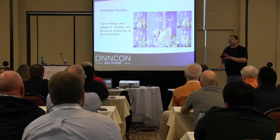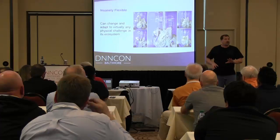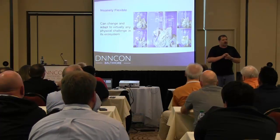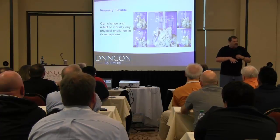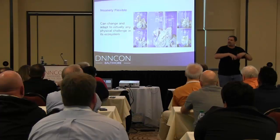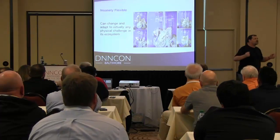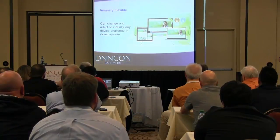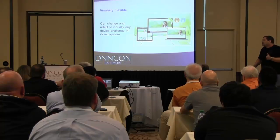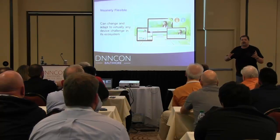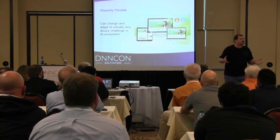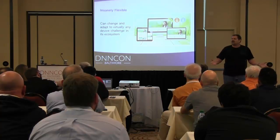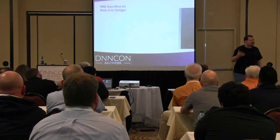Octopodes are also insanely flexible. The only hard part of an octopus body is their beak. Everything else is soft tissue, and it can bend and twist and stretch and grasp — they're really amazing animals to watch. DNN is also insanely flexible. Not only is it flexible in responsive layouts and that sort of thing, but DNN doesn't even have to be a website. DNN can be the web API talking to your mobile app.